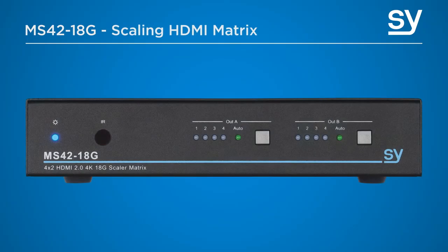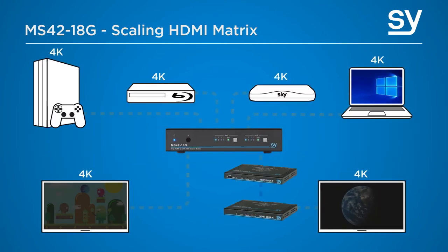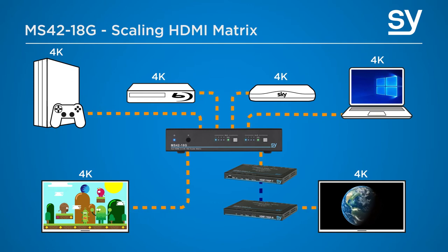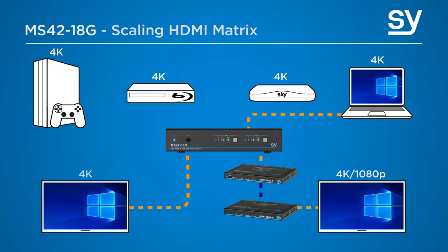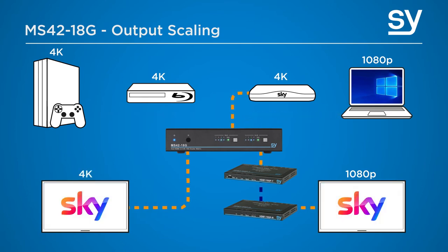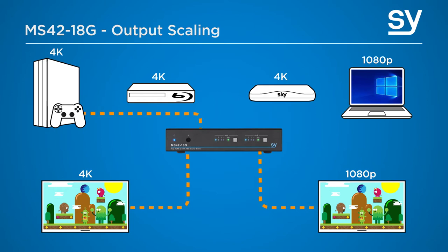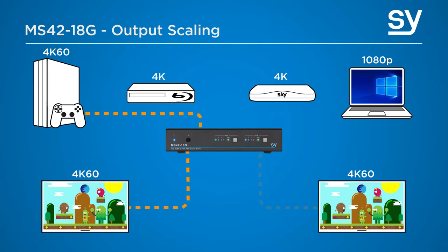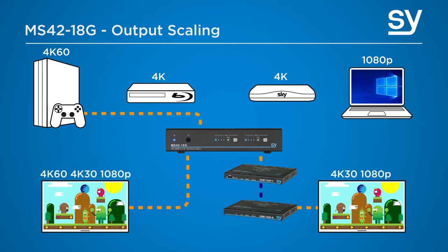The MS-4218G is a superb HDMI matrix video switcher with four HDMI inputs and two independent downscaling HDMI outputs. Any of the four inputs can be switched to either of the two independent output channels. No matter what input resolution is injected into the device, you can be sure that a fixed resolution output is sent from either of the two outputs courtesy of the output scaling function. Each input and output supports up to 4K 60 4:4:4 HDMI video — that's 18G. The outputs can be individually scaled down from 4K to 1080p to best match the connected display devices.